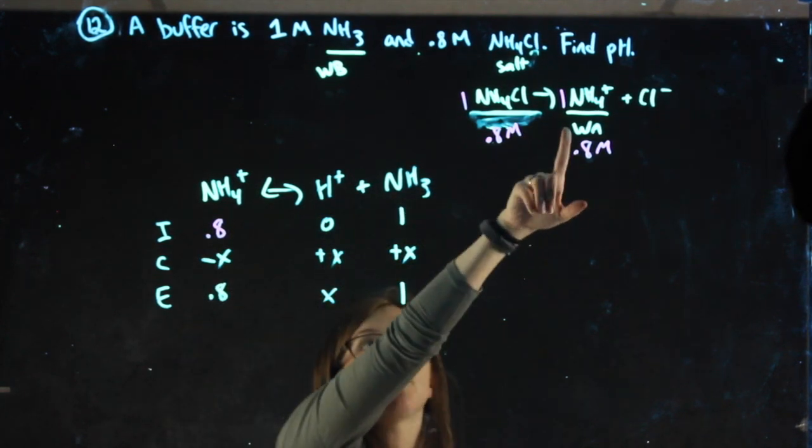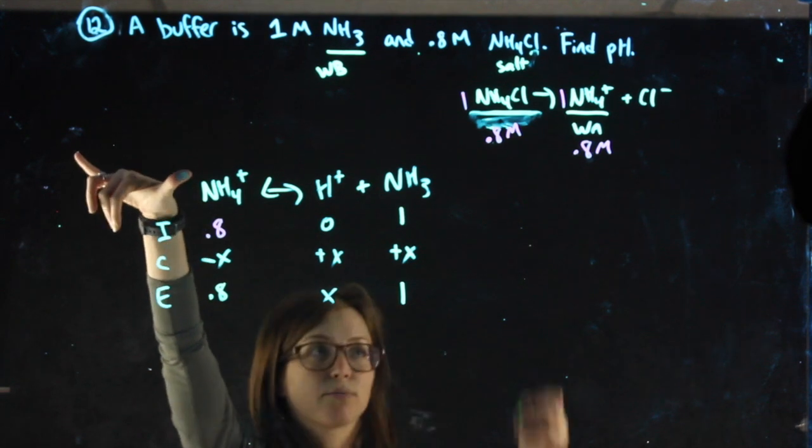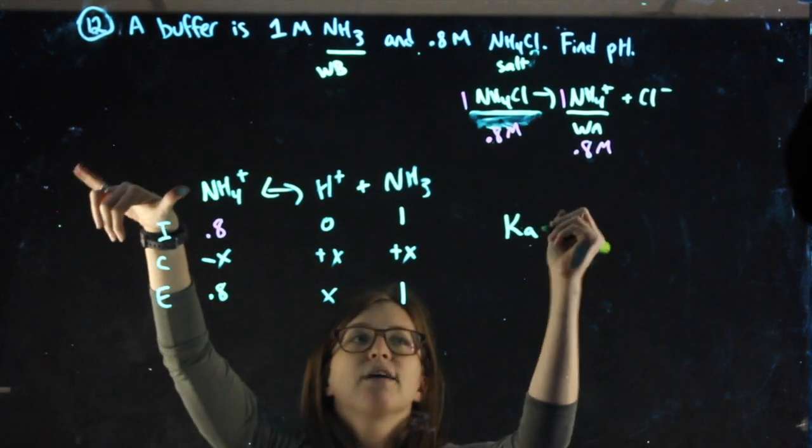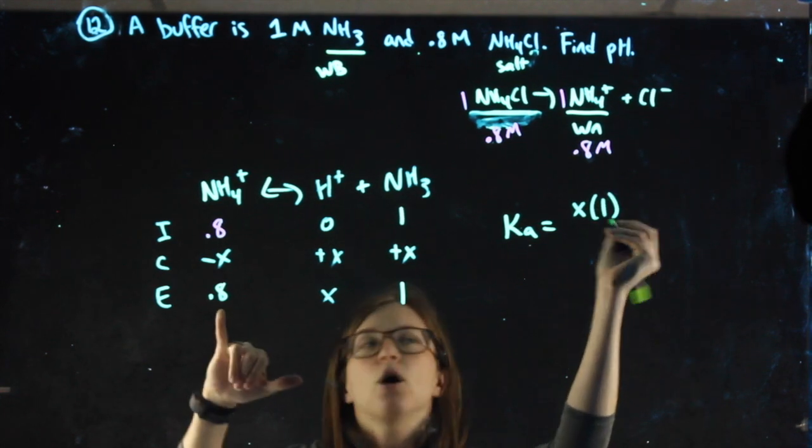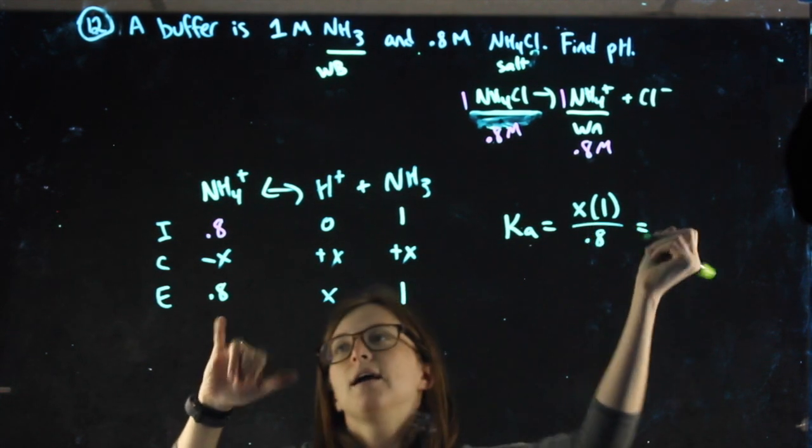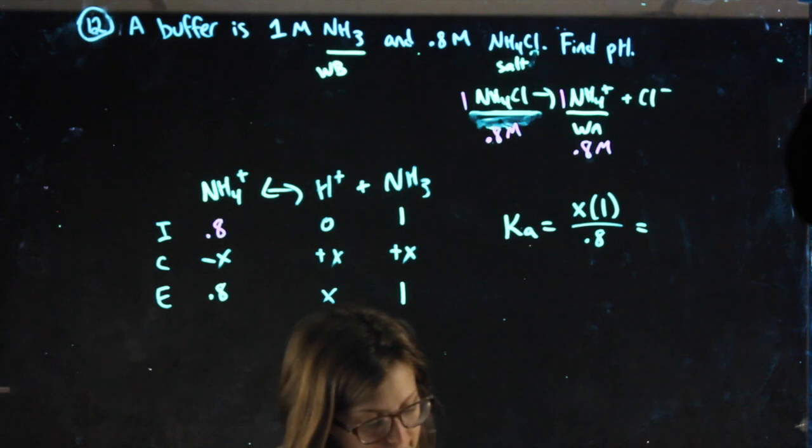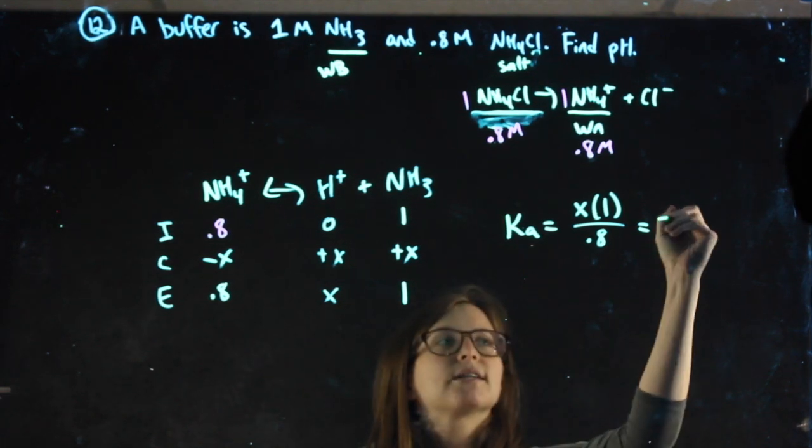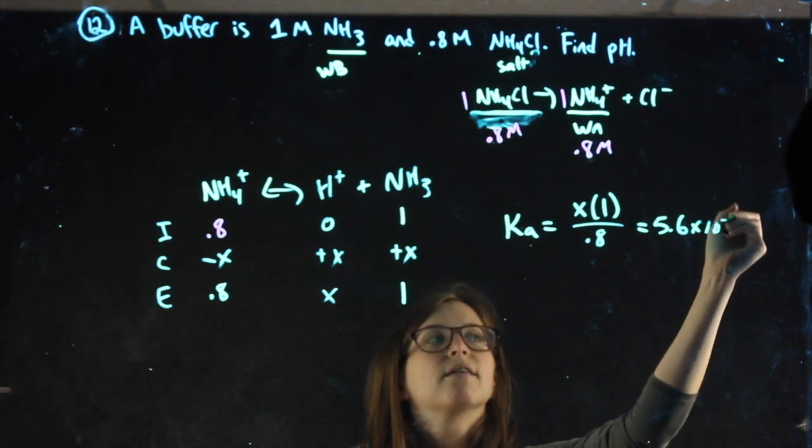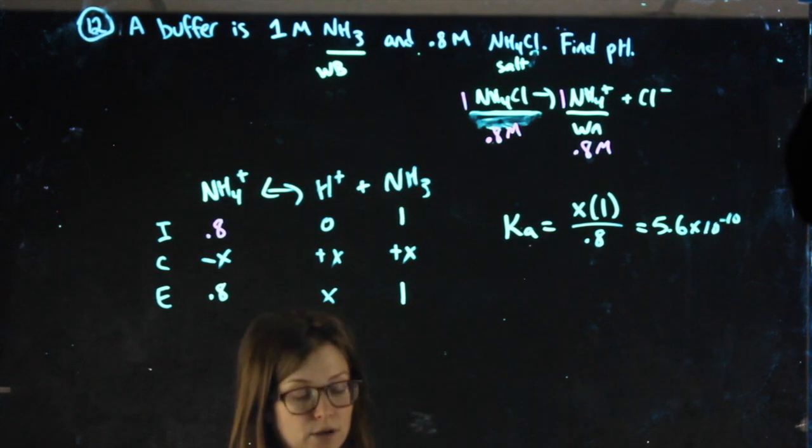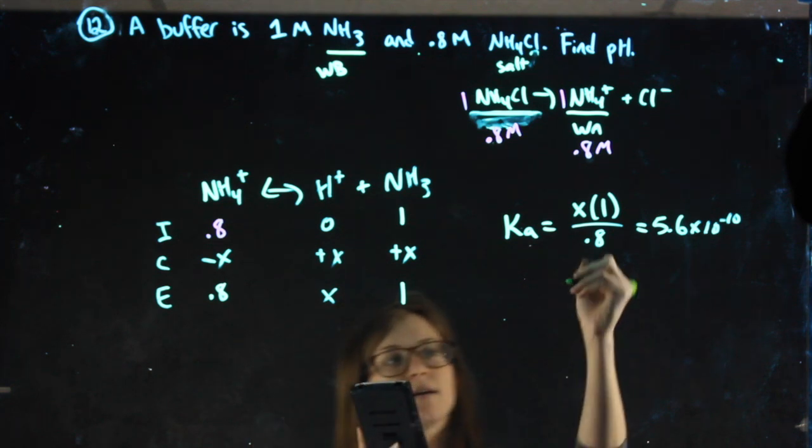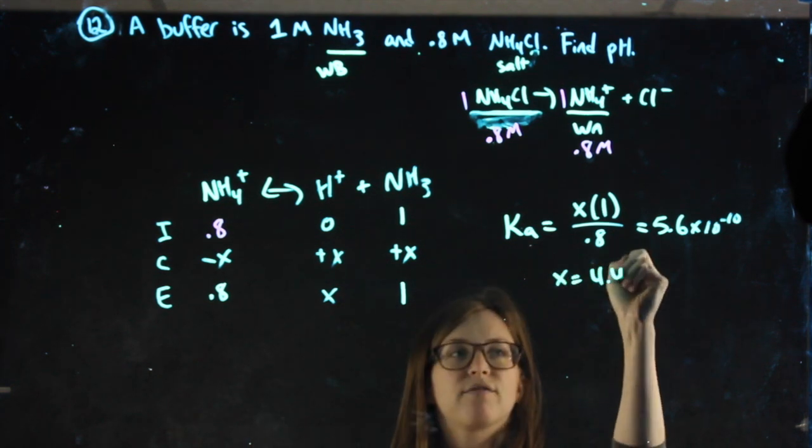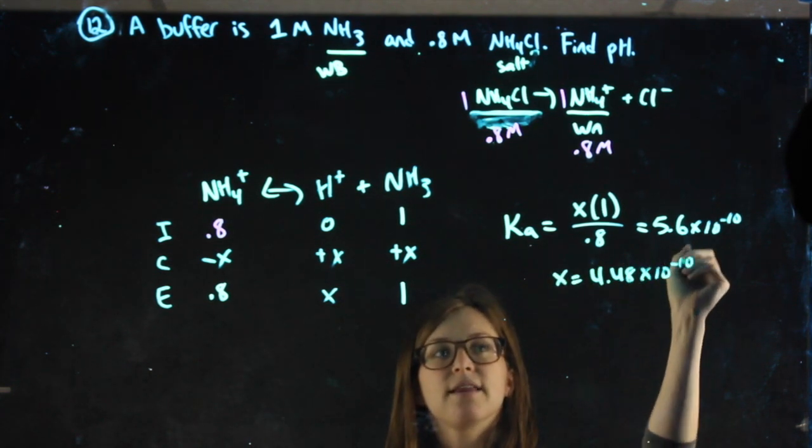Now I chose to do a weak acid problem, so I'm going to use a Ka for NH4. It's going to equal products over reactants. The Ka is going to be the Ka for NH4, 5.6 times 10 to the negative 10. Solving for X, I get 4.48 times 10 to the negative 10.